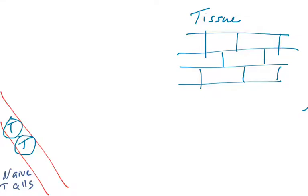So now we have naive T cells circulating in the blood. They've left the thymus. They're either CD4 positive or CD8 positive, and they're in the bloodstream.